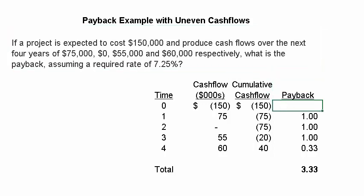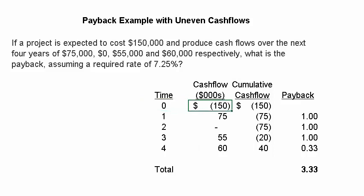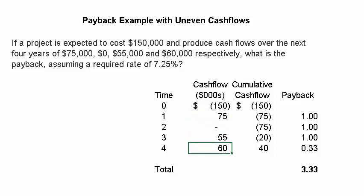Here's how I lay out the analysis. We list the cash flows by period. Right now, at period zero, we spend $150,000. Then we generate $75,000 in the next year, zero the year after that, $55,000 the year after that, and $60,000 the year after that.